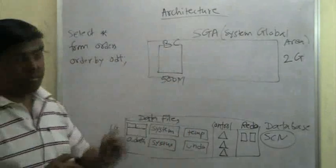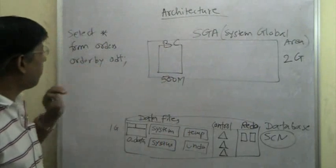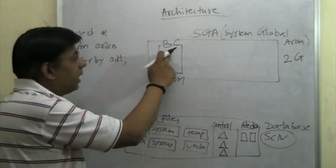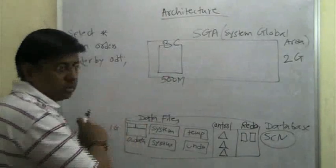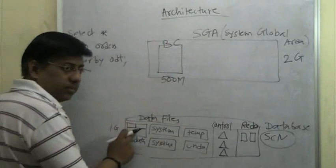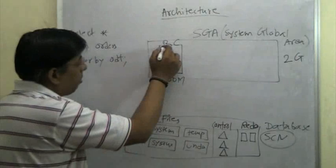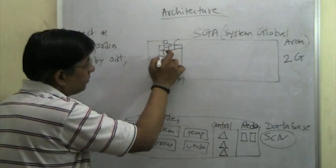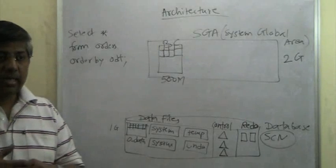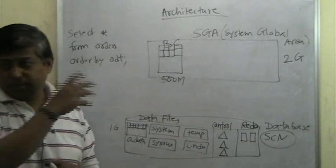When a user issues SELECT * FROM orders ORDER BY..., Oracle will check whether the data blocks for the orders table are already in the buffer cache. Usually if the database has just been started, everything is on the disk. So all those data blocks which contain the order data are brought into the buffer cache. They will remain there because other users will benefit from their presence.